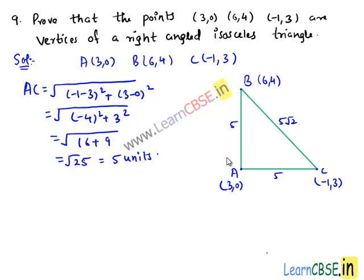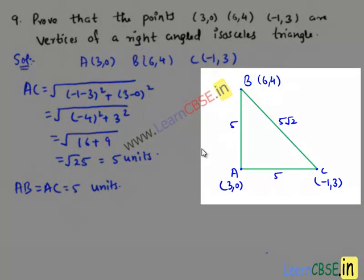Here we see that AB equals AC equals 5 units, which means triangle ABC is an isosceles triangle.